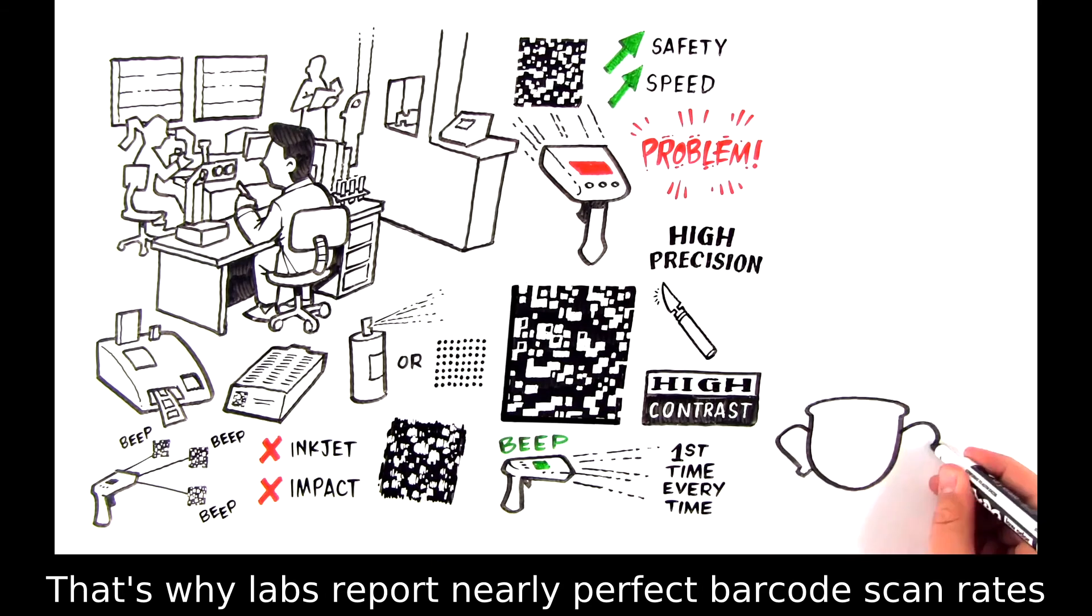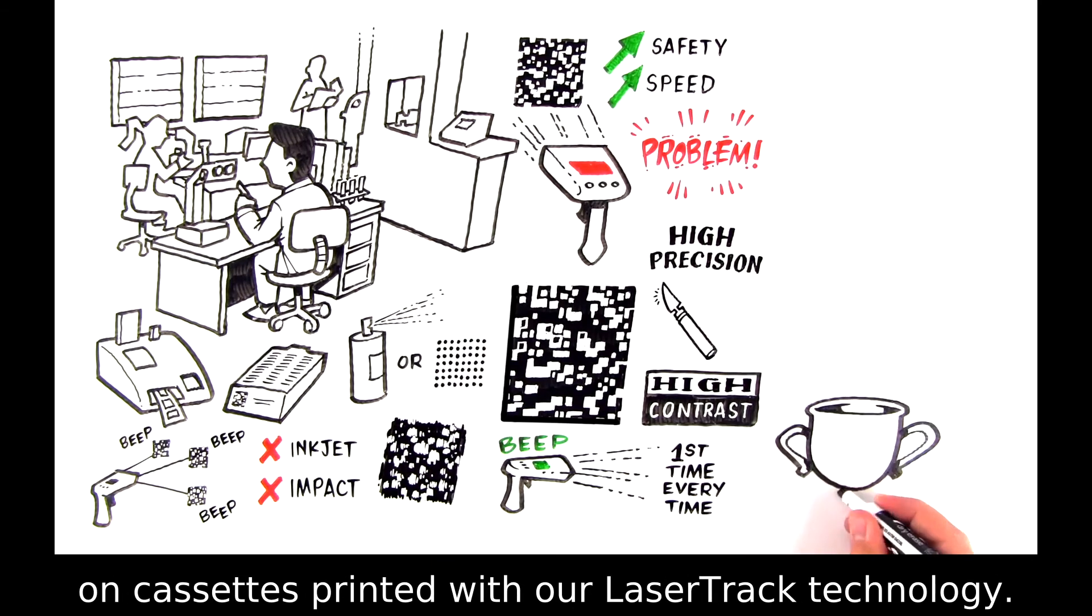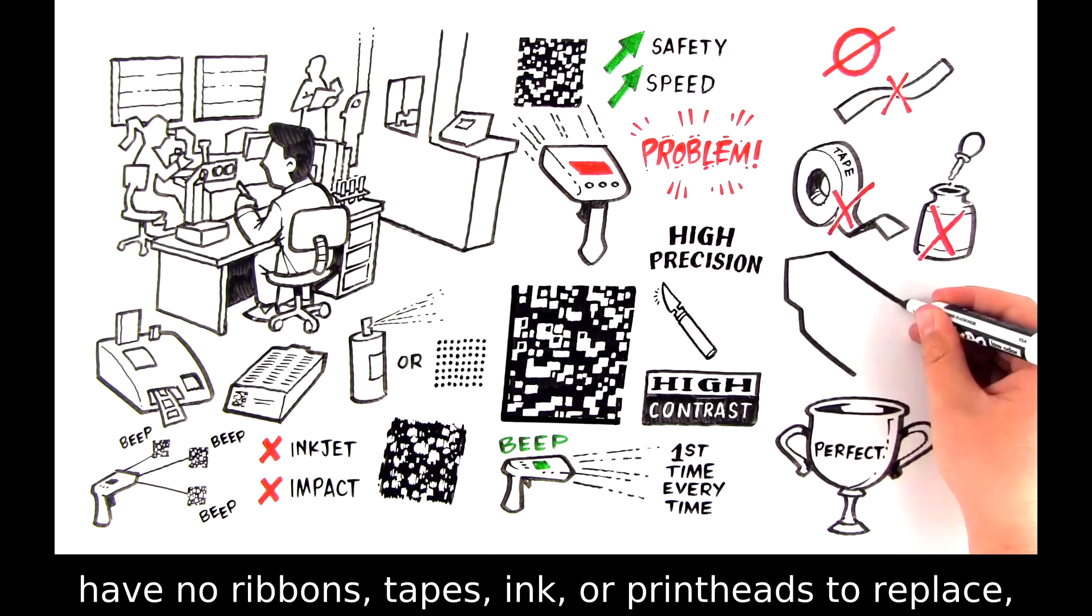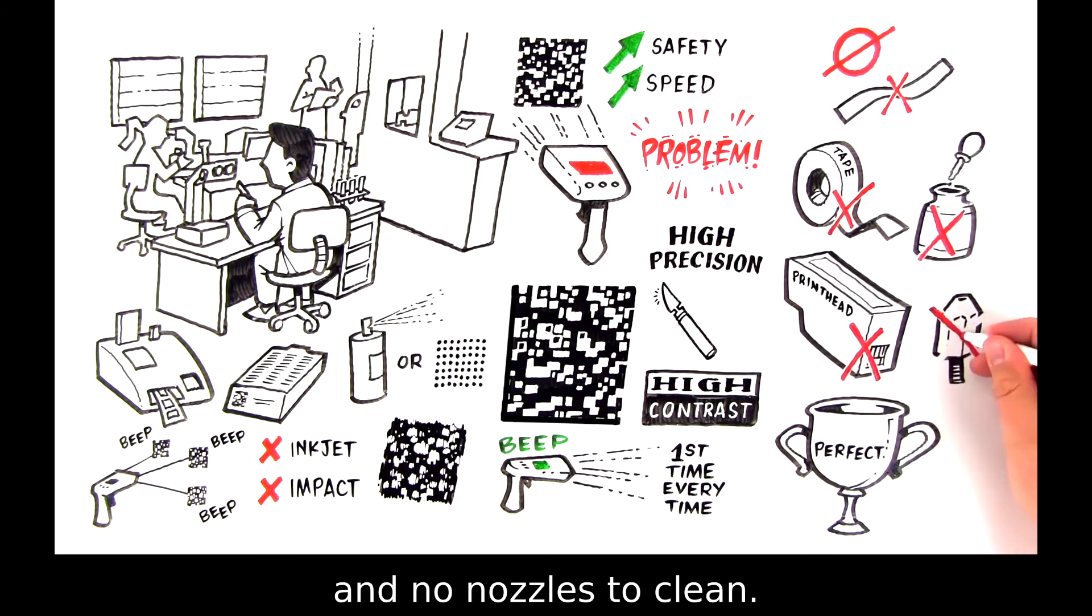That's why labs report nearly perfect barcode scan rates on cassettes printed with our LaserTrack technology. Plus, General Data's LaserTrack cassette printers have no ribbons, tapes, ink, or print heads to replace and no nozzles to clean.